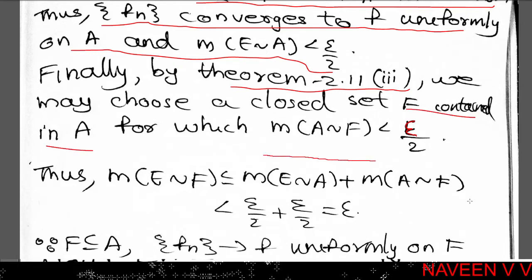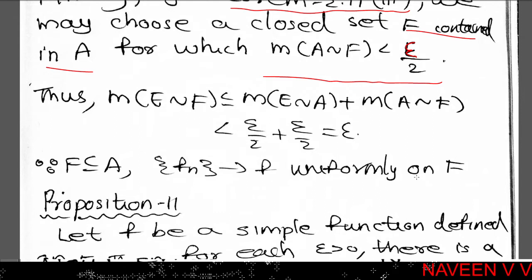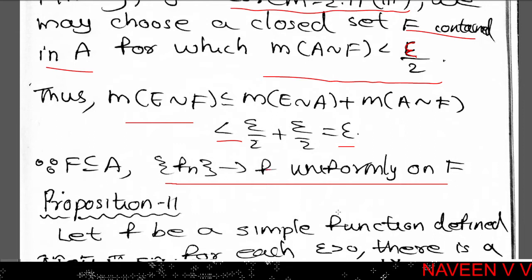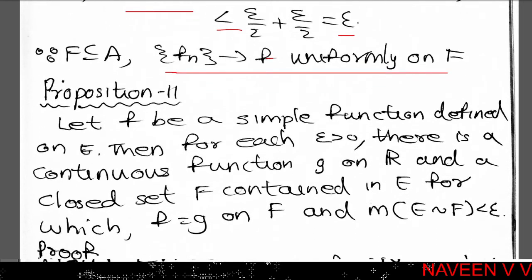F is a subset of A and A is a subset of E, and measure of E is finite. So, measure of E minus F is less than or equal to measure of E minus A plus measure of A minus F, which is less than epsilon by 2 plus epsilon by 2, which equals epsilon. Therefore, measure of E minus F is less than epsilon. Since F is a subset of A, and fn converges to f uniformly on A, the sequence fn converges to f uniformly on F. So there is a closed set F contained in E for which fn converges to f uniformly on F and measure of E minus F is less than epsilon.